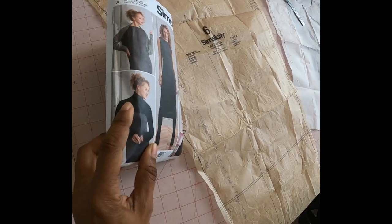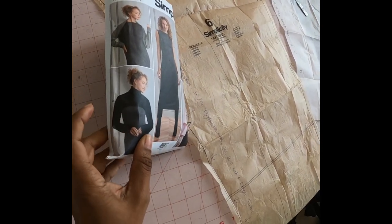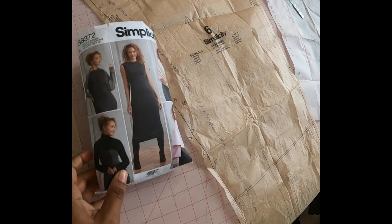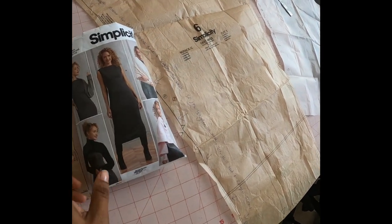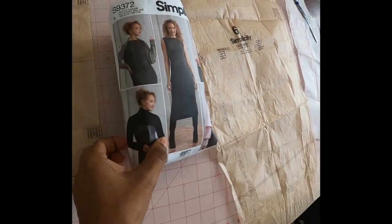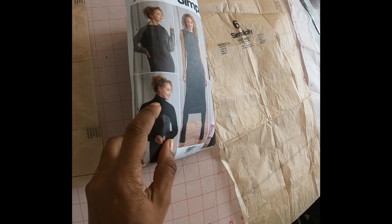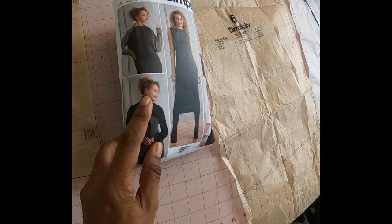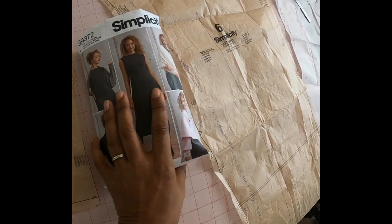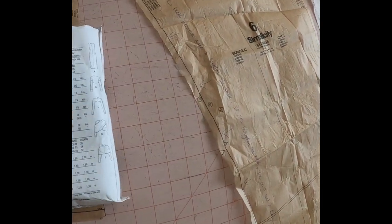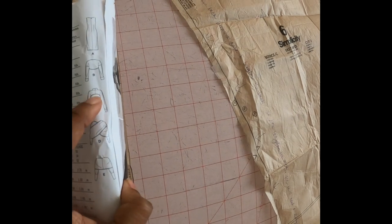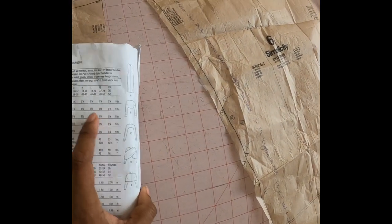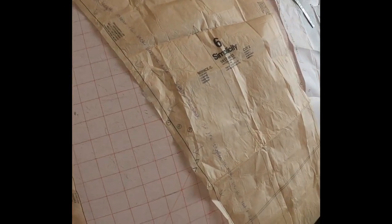We are going to make view C without an invisible zipper. I do want to mention that once this is all done, the neckline for view C is not going to be as close as it is here on the model. Also, view C in the back is very high.